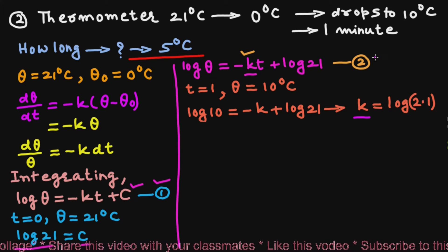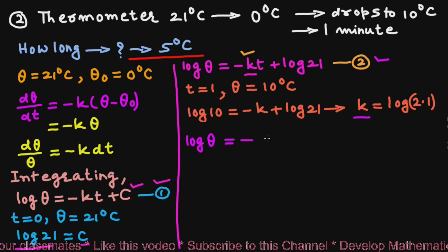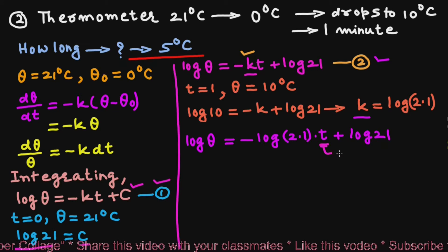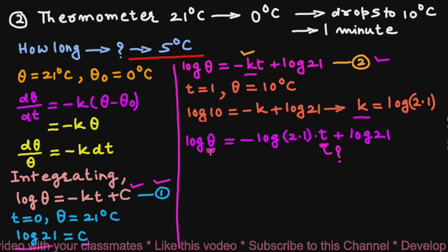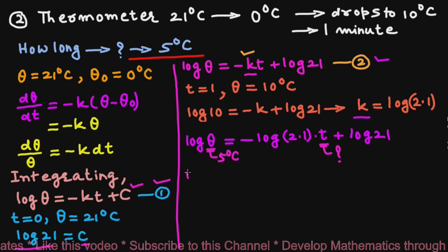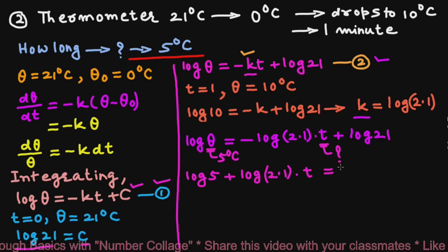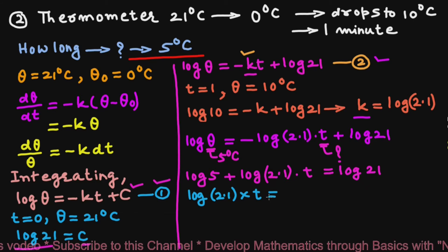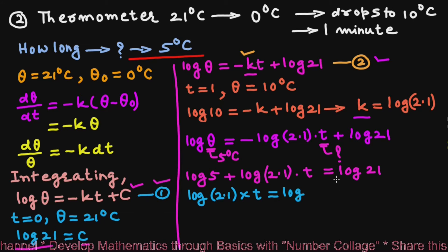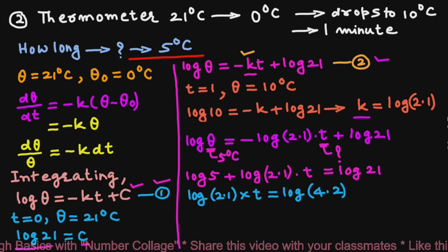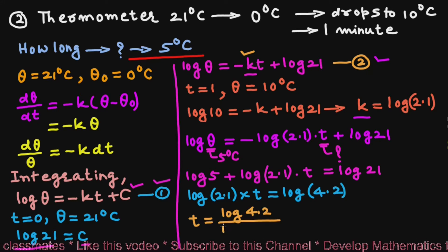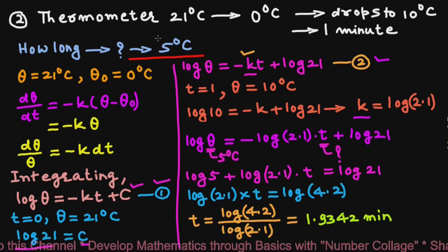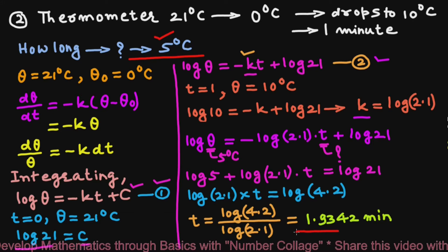Using this value of k in the equation, we write log θ = −log(2.1) · t + log 21. We have to find how long it takes for the temperature to drop to 5°C. So we write log 5 + log(2.1) · t = log 21, giving log(2.1) · t = log(21/5) = log 4.2. Therefore, t = log(4.2)/log(2.1) = 1.9342 minutes. The temperature of the thermometer will drop to 5°C after 1.9342 minutes.